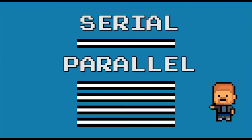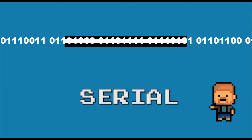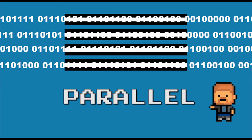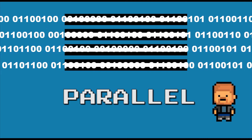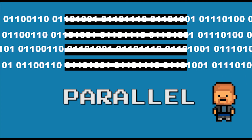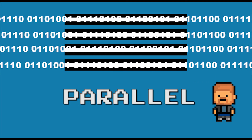Communications between computers and devices can be done using two different physical methods: serial transmission, which uses a single wire to transfer bits of data, or parallel transmission, which uses multiple wires to transfer bits of data. Serial transmission uses one wire so it's cheaper, but it's also slower as only one bit can be transferred at a time. Parallel transmission is considerably faster as it can transfer multiple bits at a time; however, it is more expensive and can only be used over short distances, as interference can often affect and corrupt the signal.